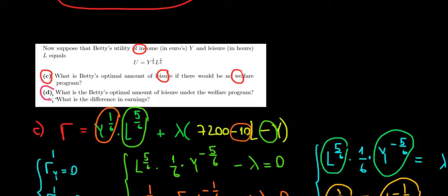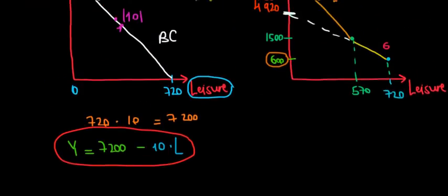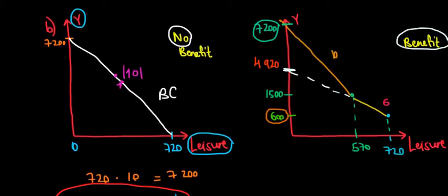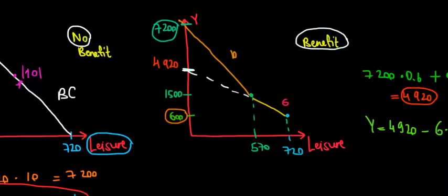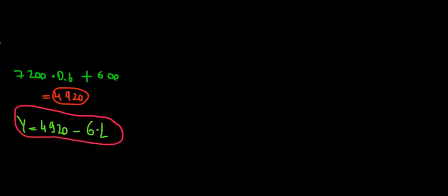Let's work on part D now. What is the optimal amount of leisure with the welfare program? The difference is in earnings. Basically, we're going to replicate the same math except with a different budget constraint. We're thinking now about the program with the benefit, and we're going to use this new budget constraint in our Lagrangian. Let's write the Lagrangian over here so we can keep track of the budget constraint as well.